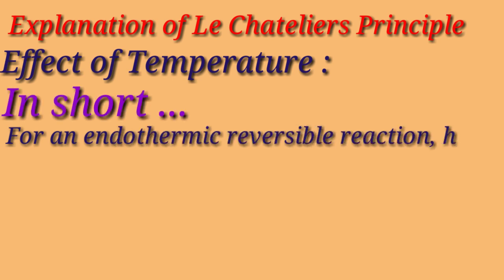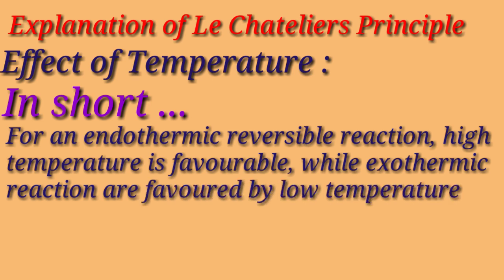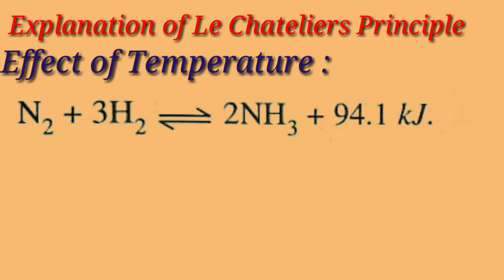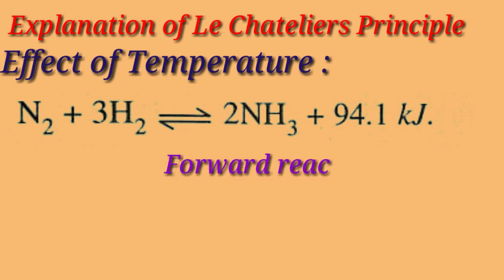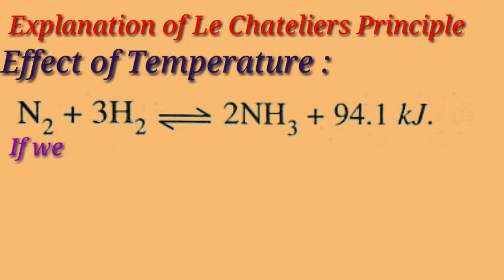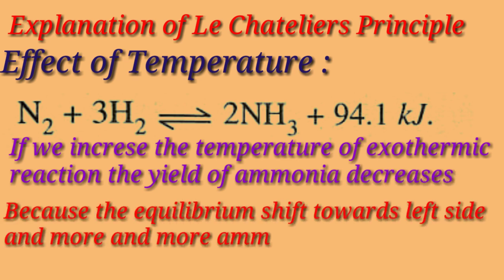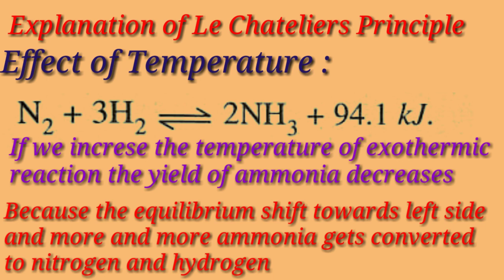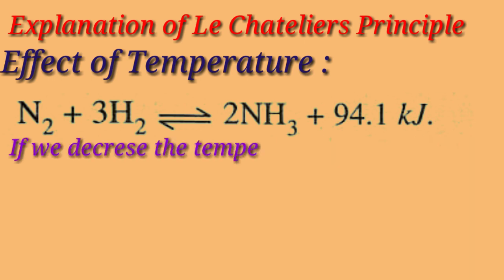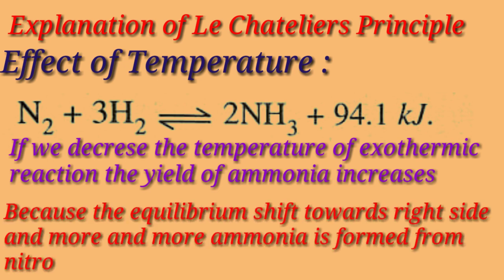For an endothermic reversible reaction, high temperature is favorable, while exothermic reactions are favored by low temperature. For example, formation of ammonia — that is, Haber's process. In this case, the forward reaction is exothermic because 94.1 kilojoules of heat is liberated. If we increase the temperature of this exothermic reaction, the yield of ammonia decreases because the equilibrium shifts towards the left side and more and more ammonia gets converted into nitrogen and hydrogen. On the other hand, if the temperature is decreased, equilibrium shifts in the direction in which heat is absorbed, favoring the forward reaction. Hence, low temperature favors the formation of ammonia.